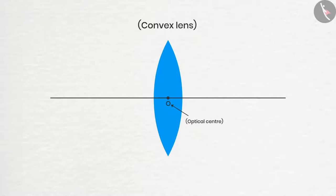As they have two surfaces, they have two focuses too, which are represented by F1 and F2. Twice the distance from O to F1 and F2 are called 2F1 and 2F2 respectively. And just like a mirror, all these points are found on the principal axis.